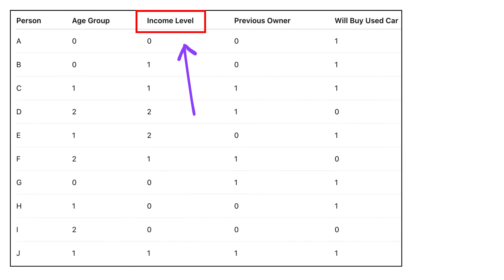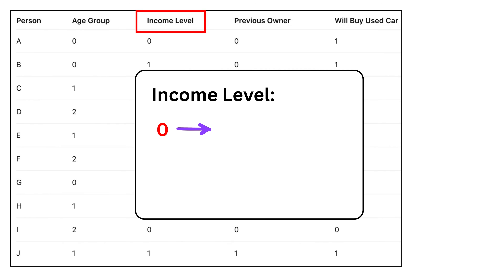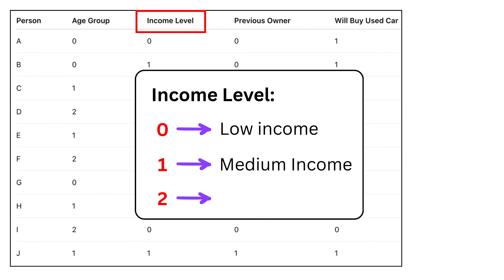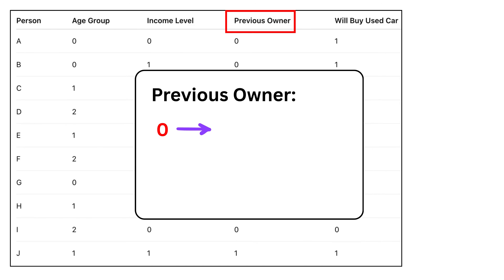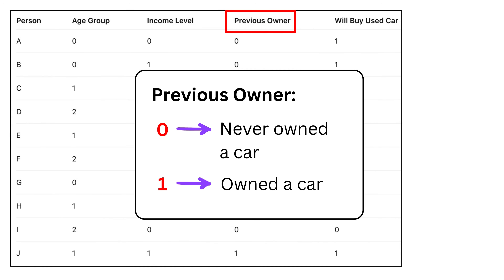The second feature is income level. We use numbers here to keep things simple. If income level is 0, the person earns a low income. If it is 1, they earn a medium income. If it is 2, they have a high income. The third feature is previous car owner — this tells us whether the person has owned a car before. If previous car owner is 0, the person has never owned a car. If it is 1, they have owned a car in the past.